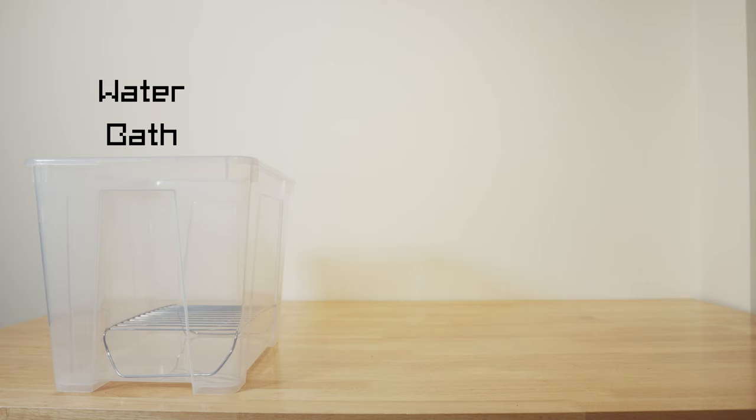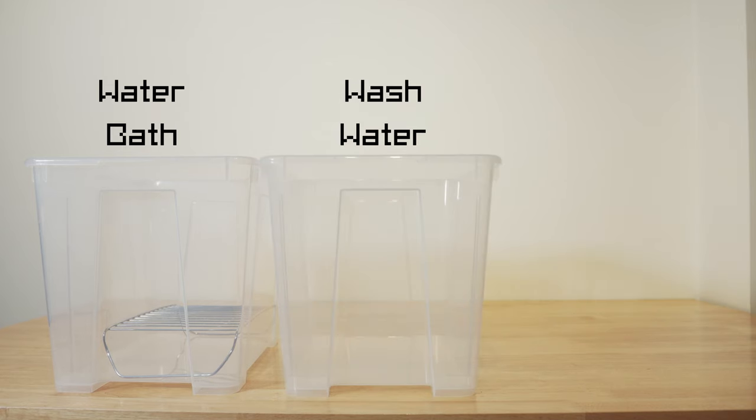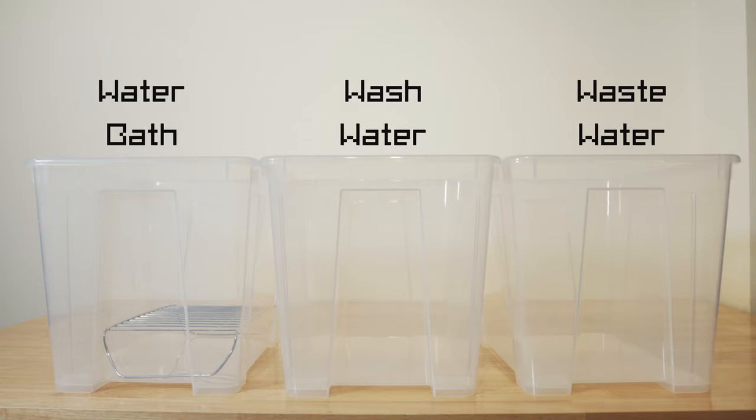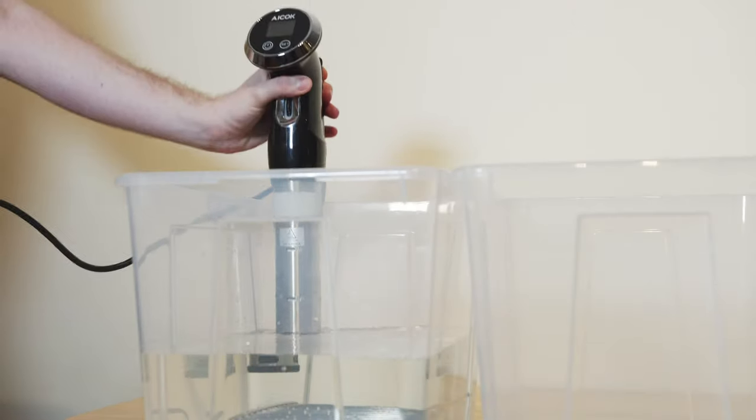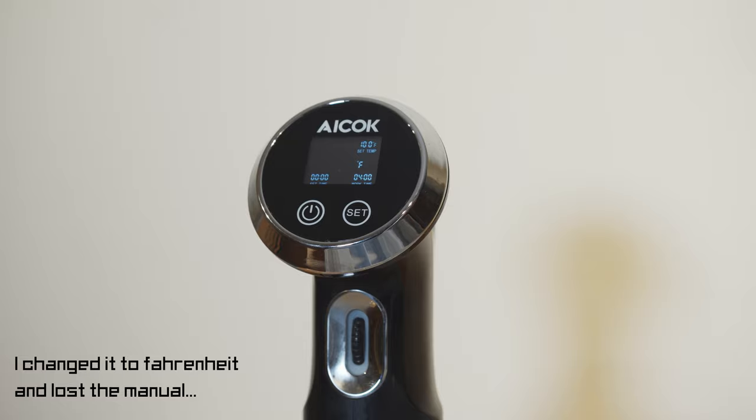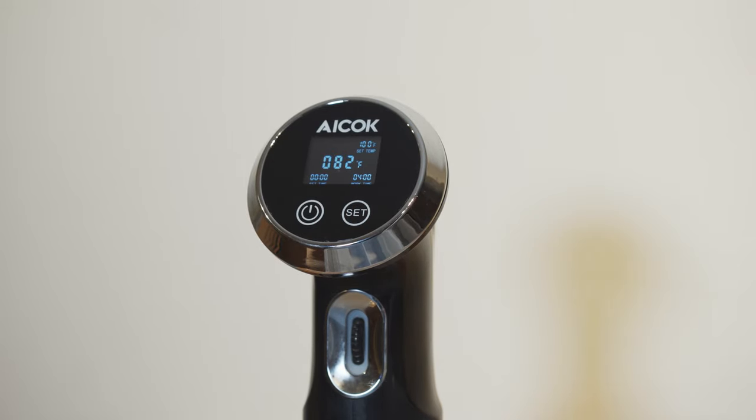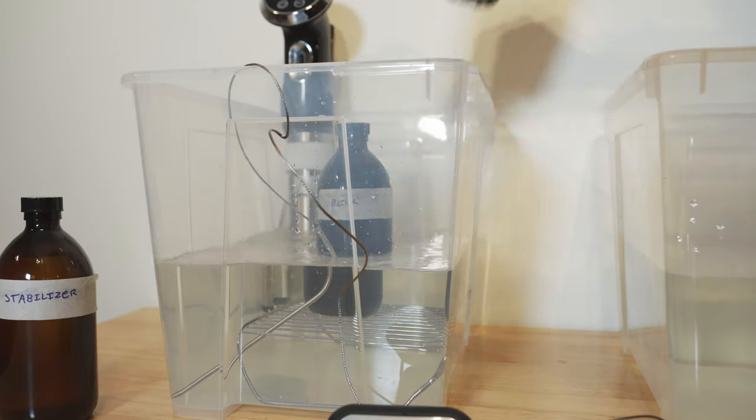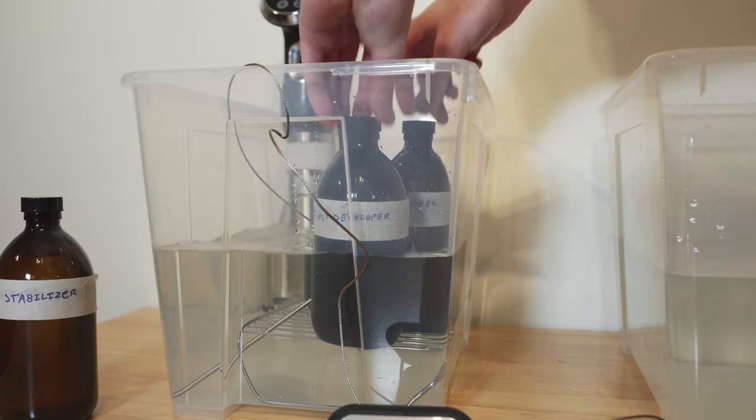To maintain the developing temperature, we set up a water bath. I'm also going to set up a container for wash water and finally I'll have a container for waste water. In order to heat and regulate the temperature in the water bath, we're going to use a sous vide machine, sometimes called an immersion circulator. This will allow us to maintain our temperature accurately without having to put in any extra effort, which is nice. Once the water bath is set up, all we need to do is put the chemistry in there and wait for it to heat up to 38 degrees Celsius.